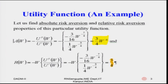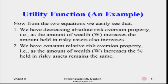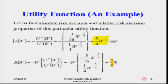Now we find A prime and R prime to determine the properties. A prime comes out to be minus (3/4) W to the power minus 2, and R prime comes out to be zero. So A prime is less than zero — it is decreasing — and R prime is zero, meaning constant relative risk aversion.